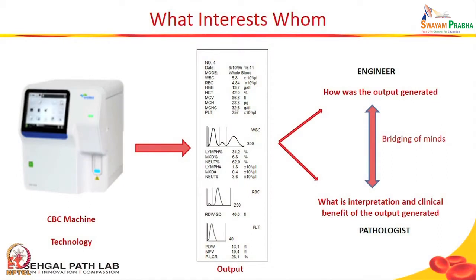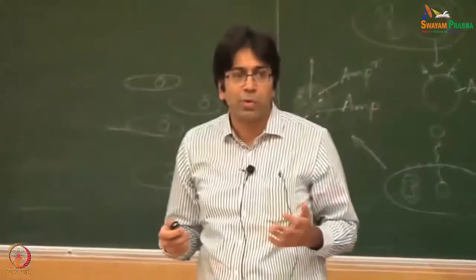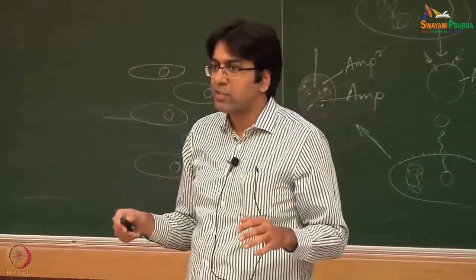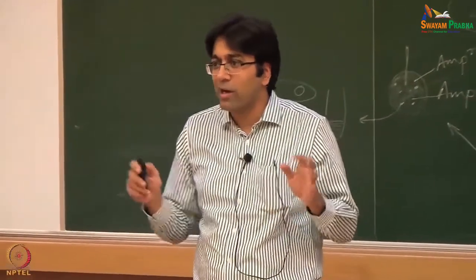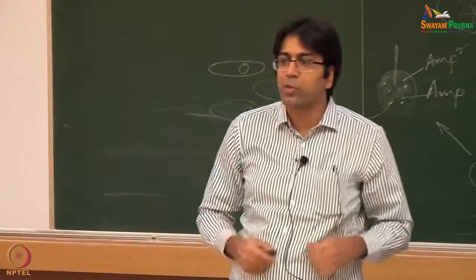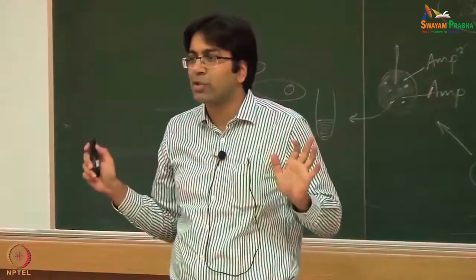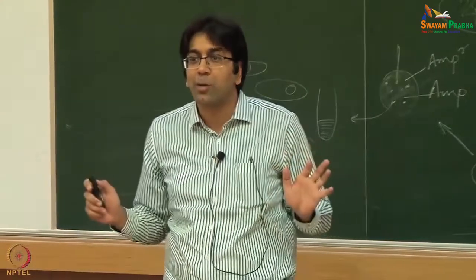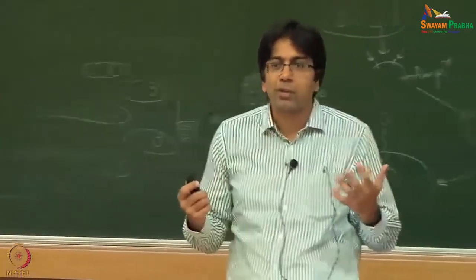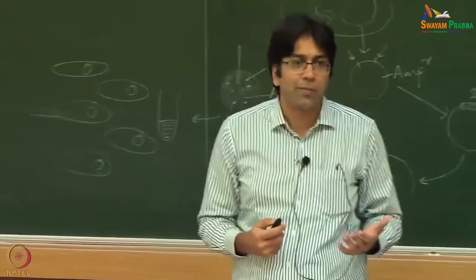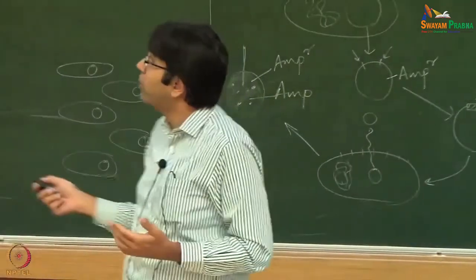For example, this is a CBC machine — the technology. And this is the output: the strip coming out from a CBC machine which tells you your haemoglobin, WBC and platelet count. The engineer wants to know how the output is generated, how to improve it. I as a doctor want to know the interpretation of this output — how can I use it for the patient. Majority of laboratorians don't understand how the instrument works or what went wrong — we call the service engineer and say 'please do the needful, I want my reports today.' This is typical, and it is not out of lack of interest, but lack of time and lack of understanding. The idea is: can we bridge this gap between engineers and doctors?